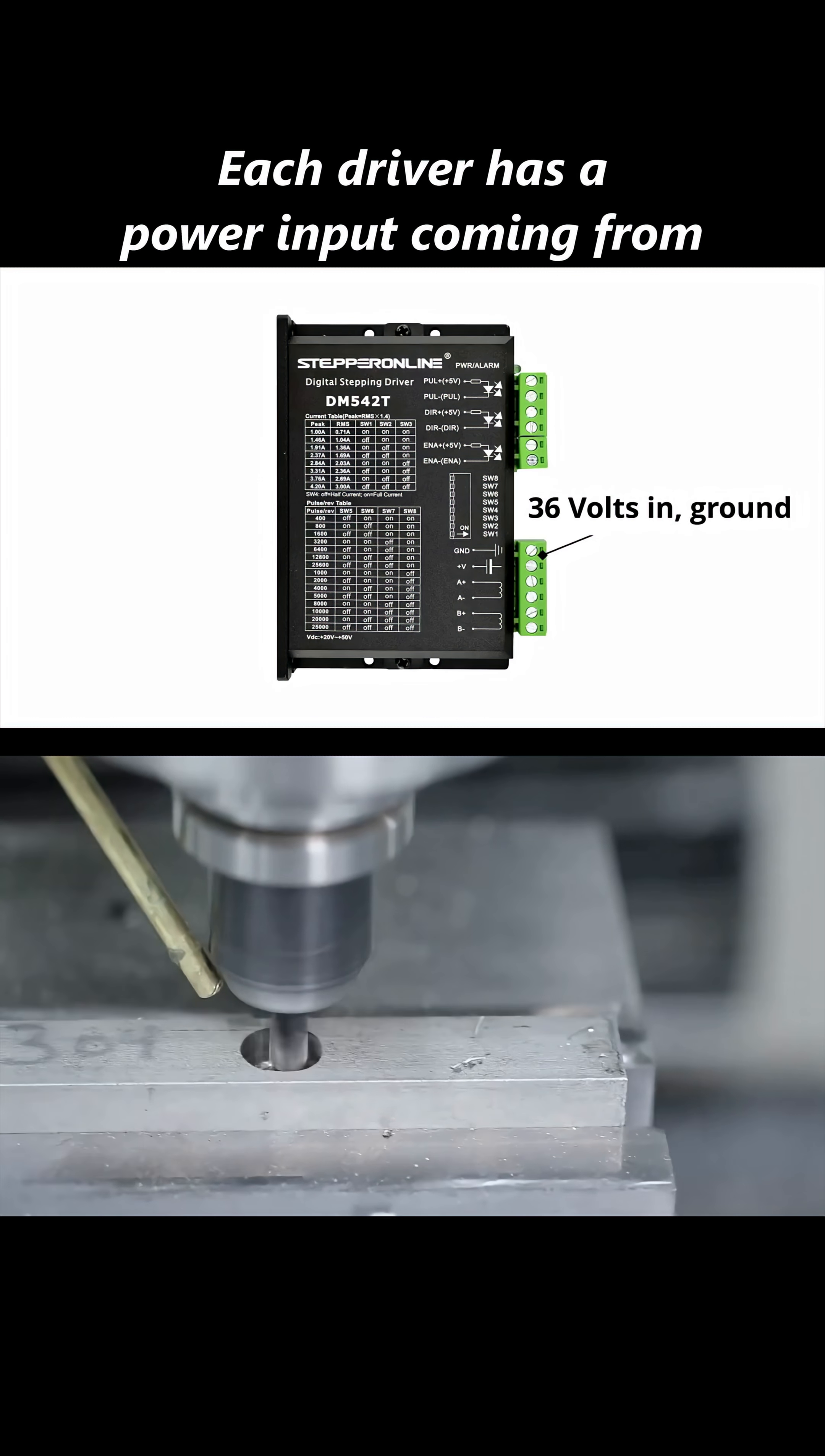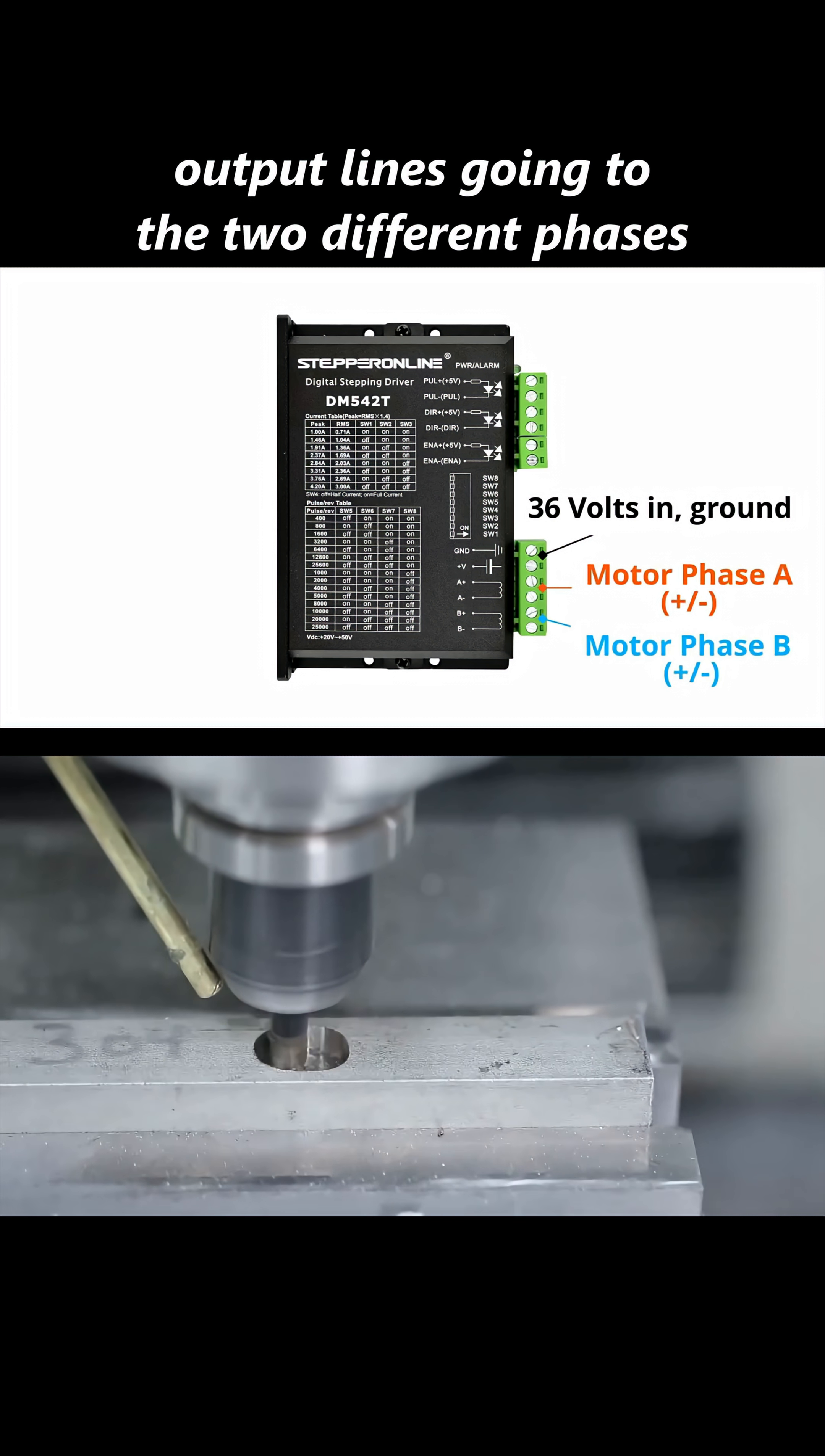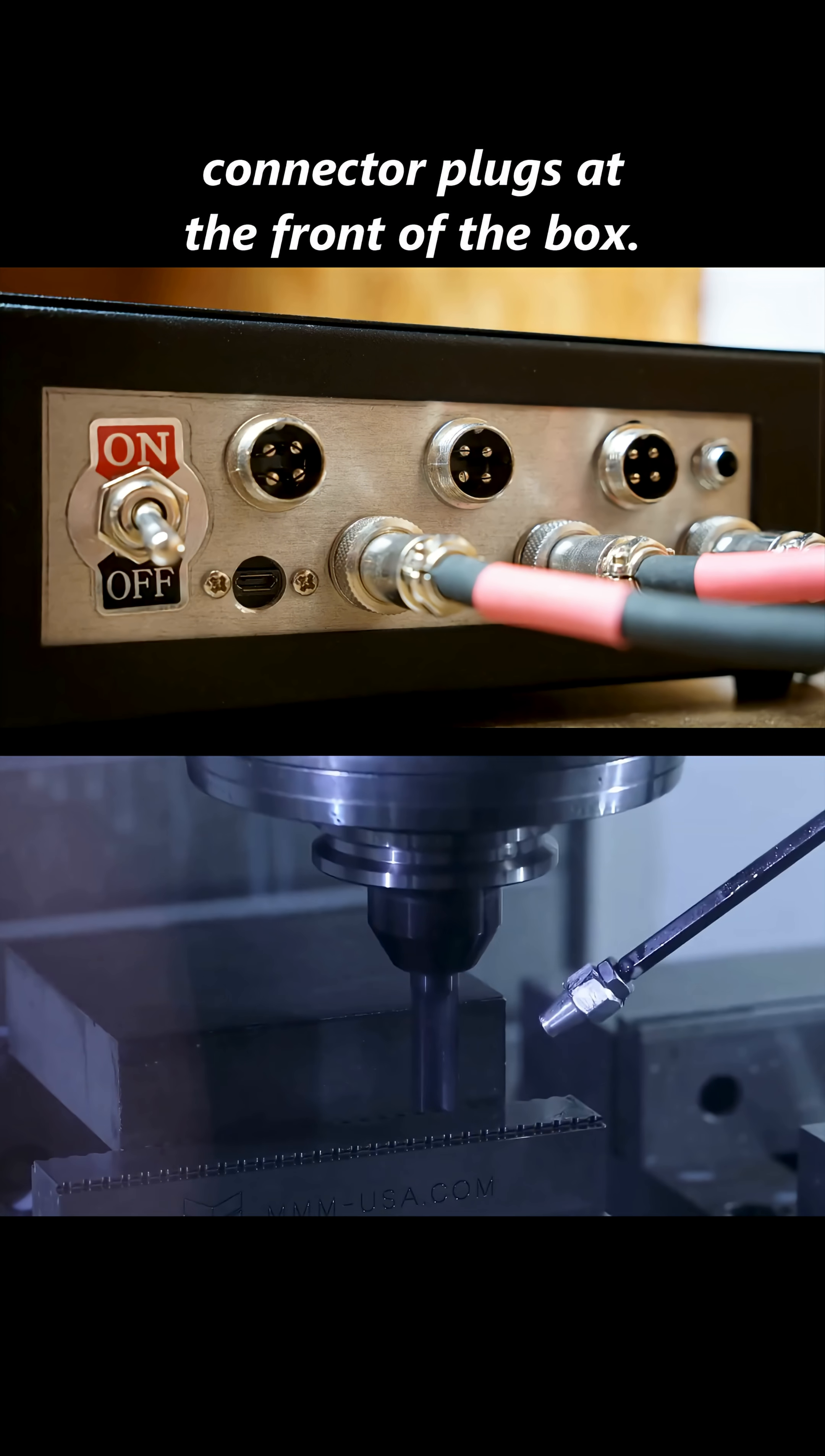Each driver has a power input coming from the 36-volt power supply and two power output lines going to the two different phases of the motor. These four wires are what go to the connector plugs at the front of the box.